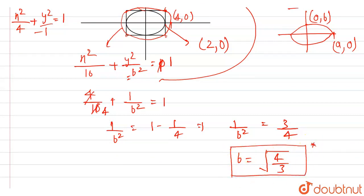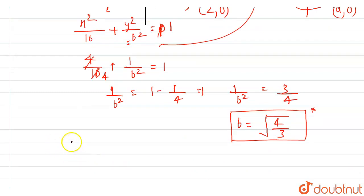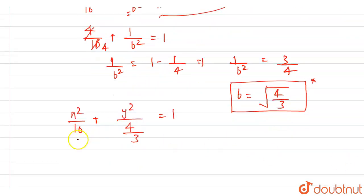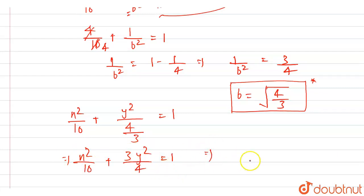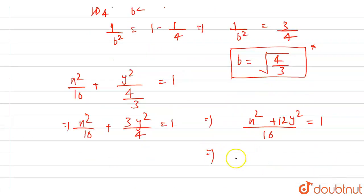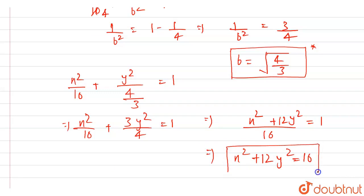Our equation of the bigger ellipse becomes x²/16 + y²/(4/3) = 1. So x²/16 + 3y²/4 = 1. Taking LCM: 16 equals x² times ... simplifying, x² + 12y² = 16. So our final equation of the ellipse is x² + 12y² = 16. This is our answer. Thank you.